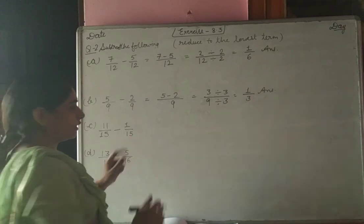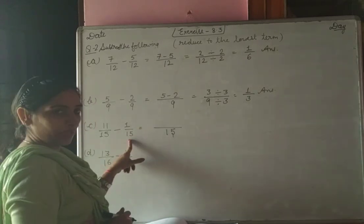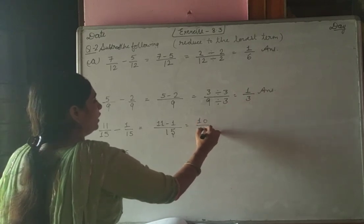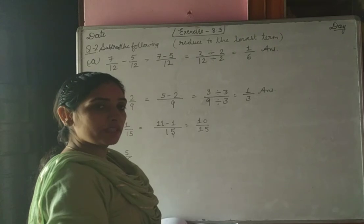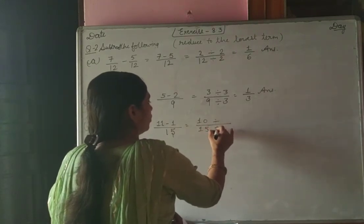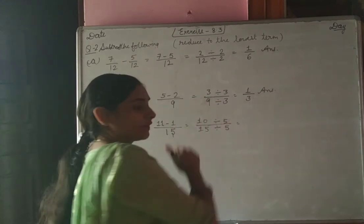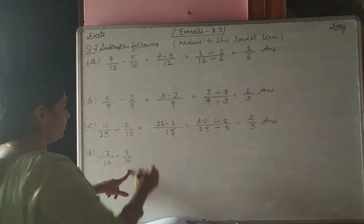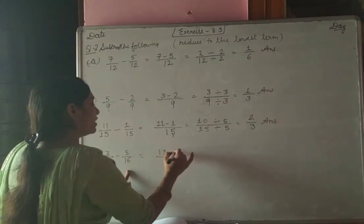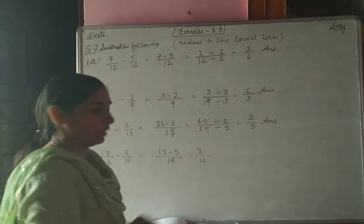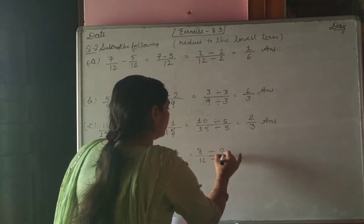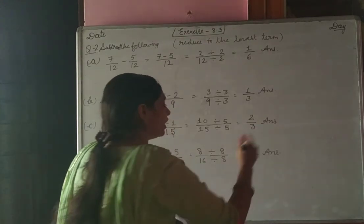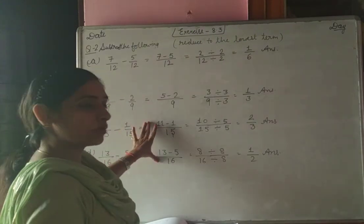Next: 11 by 15 minus 1 by 15. Denominator is the same, so LCM is 15. 11 minus 1 is 10, giving 10 by 15. Both 10 and 15 are divisible by 5, so we divide both by 5: 10 by 5 is 2, 15 by 5 is 3 — reduced to lowest term 2 by 3. Next: denominator 16, 13 minus 5 is 8, giving 8 by 16. The HCF is 8, so dividing both by 8 gives 1 by 2 — our answer in lowest term.